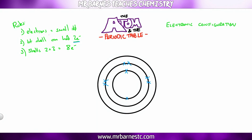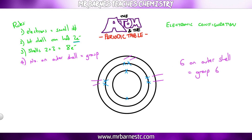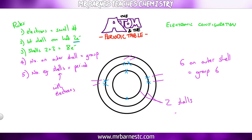This electronic configuration is very much linked to where the atom is on the periodic table. Rule four: the number of electrons in the outer shell tells you the group that the element is in. So this example here has six electrons in the outer shell, therefore it's in group six. The number of shells also tells you what period it's in — although three shells are drawn here, only two are occupied, therefore it is in period two.